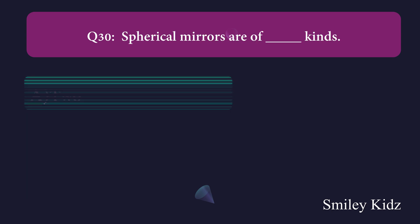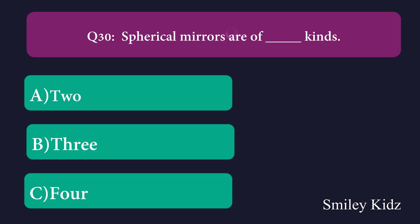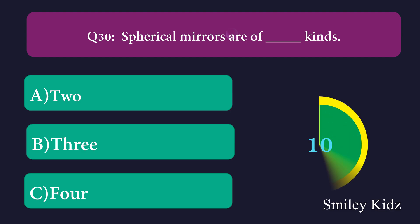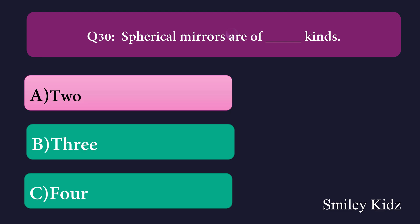Question number thirty: Spherical mirrors are of dash kinds. Option A: 2, Option B: 3, Option C: 4. The right answer is 2. Spherical mirrors are of two kinds.